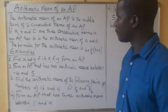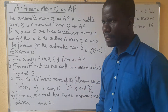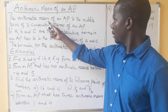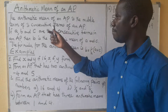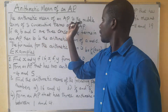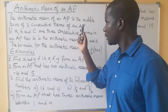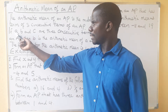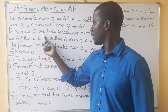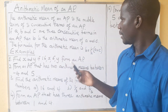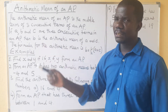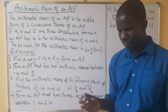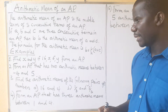What is involved in finding the arithmetic mean? An arithmetic mean of an AP is the middle term of three consecutive terms of an AP. So if A, B, and C are three consecutive terms, then the middle one is B — it becomes our arithmetic mean.